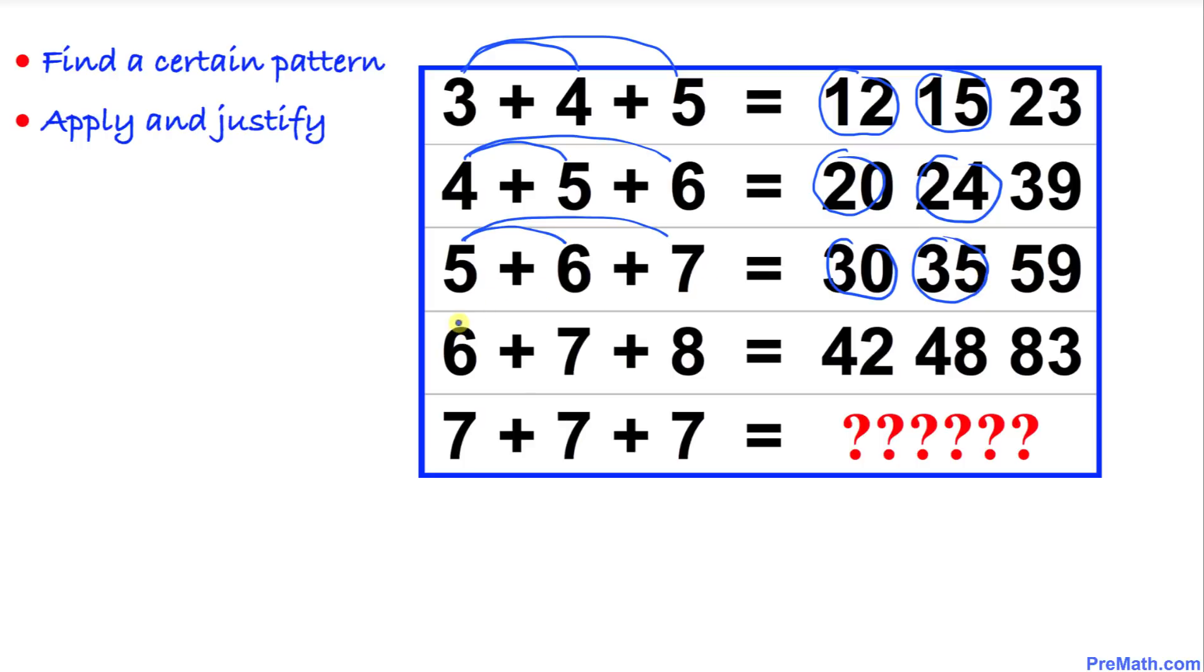And 6 times 8 is 48. So that means if we multiply 7 times 7, the first two digits are going to be 49, and then 7 times 7 is going to be 49 as well. And here is our next step.